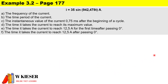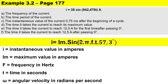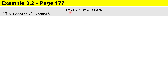In example 3.2, we have an equation for an alternating current waveform: i equals 35 sine of 942.478 times time, in amperes. The variables are: small i is the instantaneous value in amperes, im is the maximum value in amperes, f is the frequency in hertz, t is the time in seconds, and angular velocity is in radians per second. To convert radians per second to degrees, we multiply by 57.3.